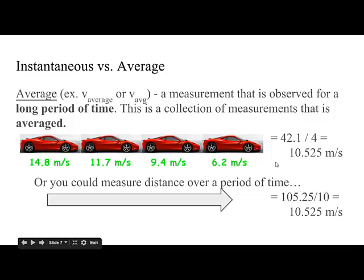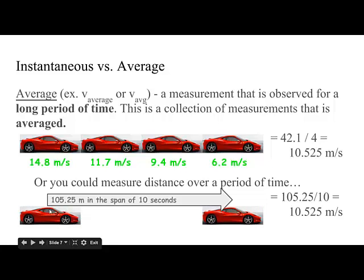There's a different way that I could really look at this. I could know exactly where my car is at one time, and then measure a very specific amount of time and find out how far I've gone. So for example, I travel 105.25 meters in the span of 10 seconds, and I can calculate my velocity. 105.25 divided by 10 seconds tells me that I traveled 10.525 meters per second.